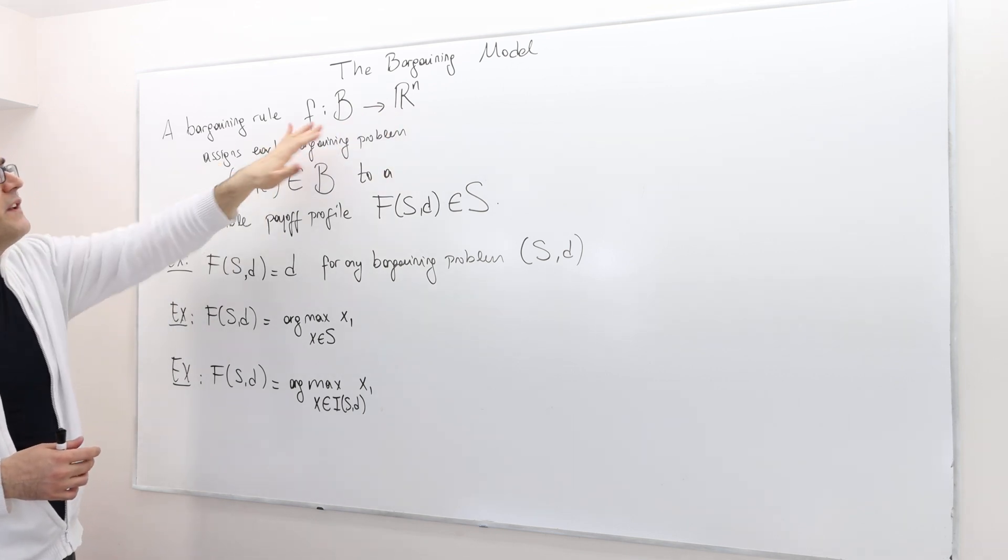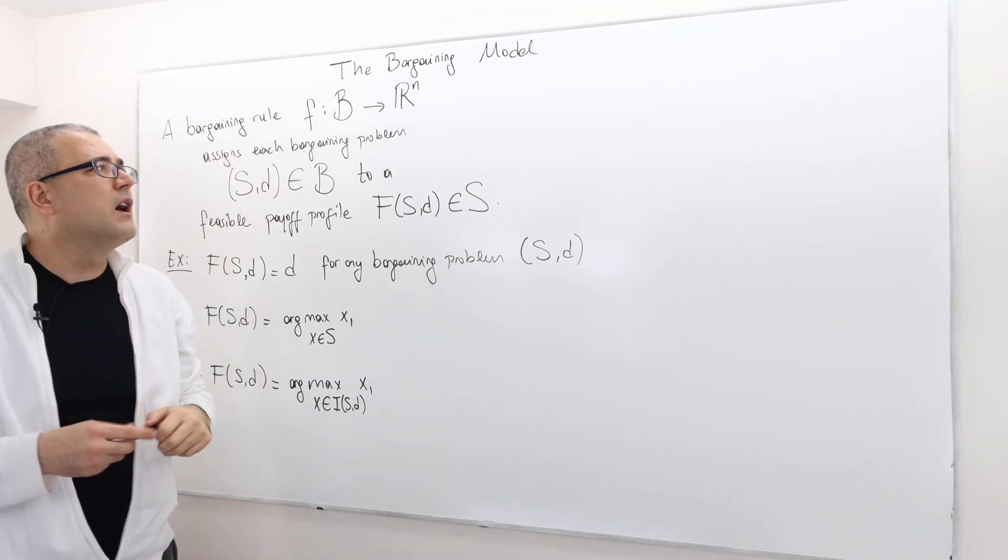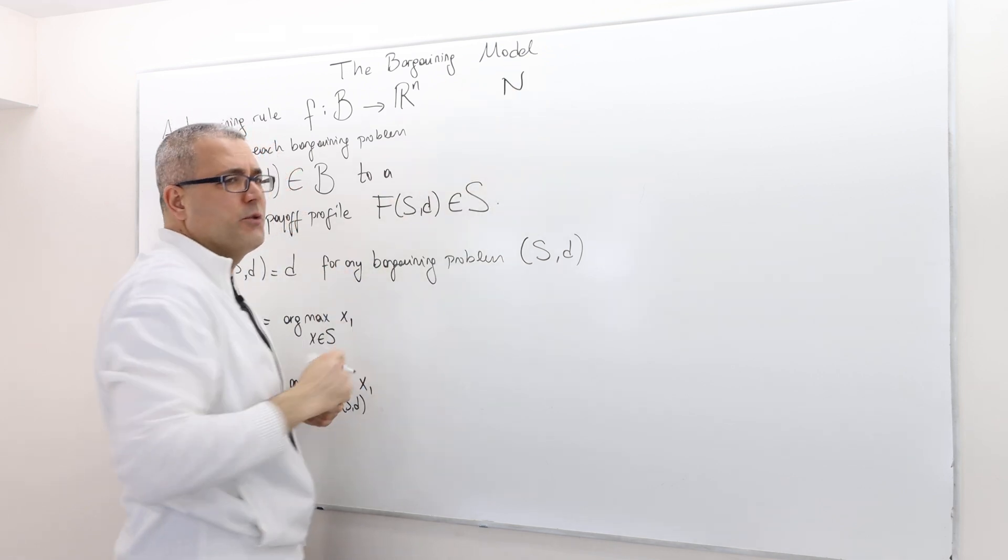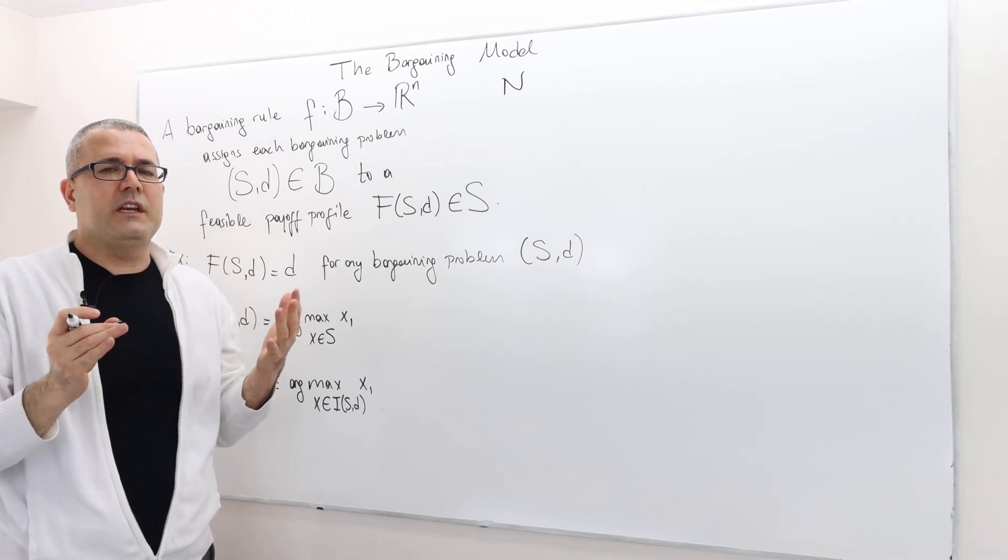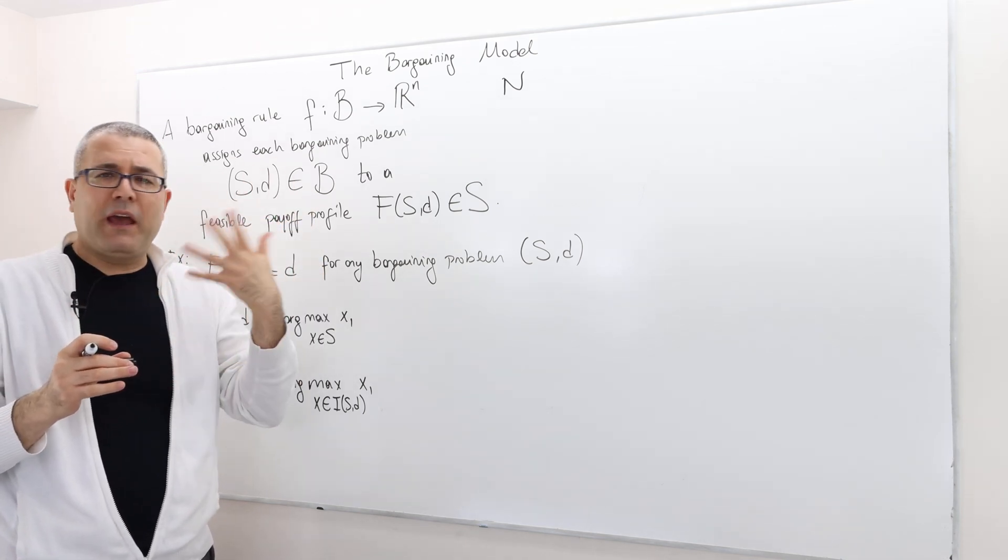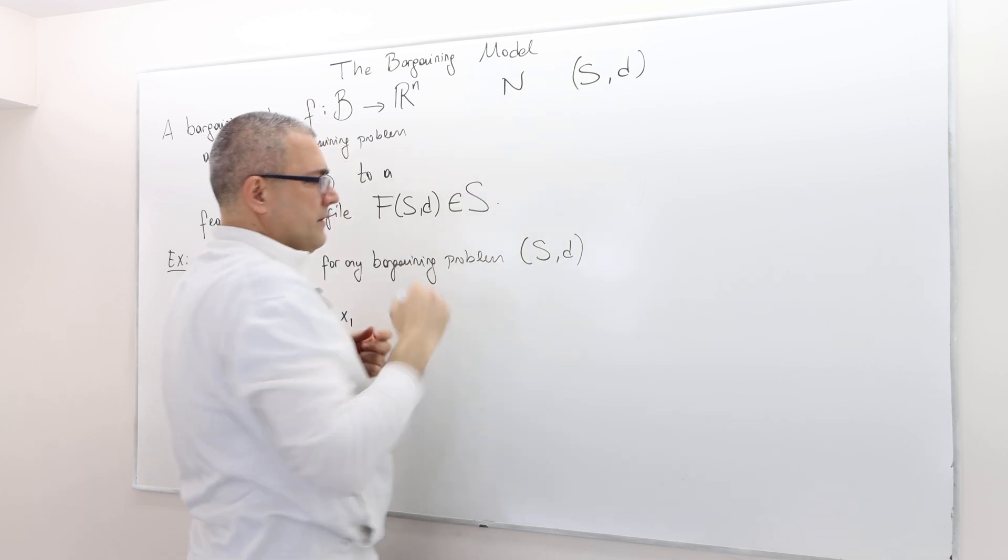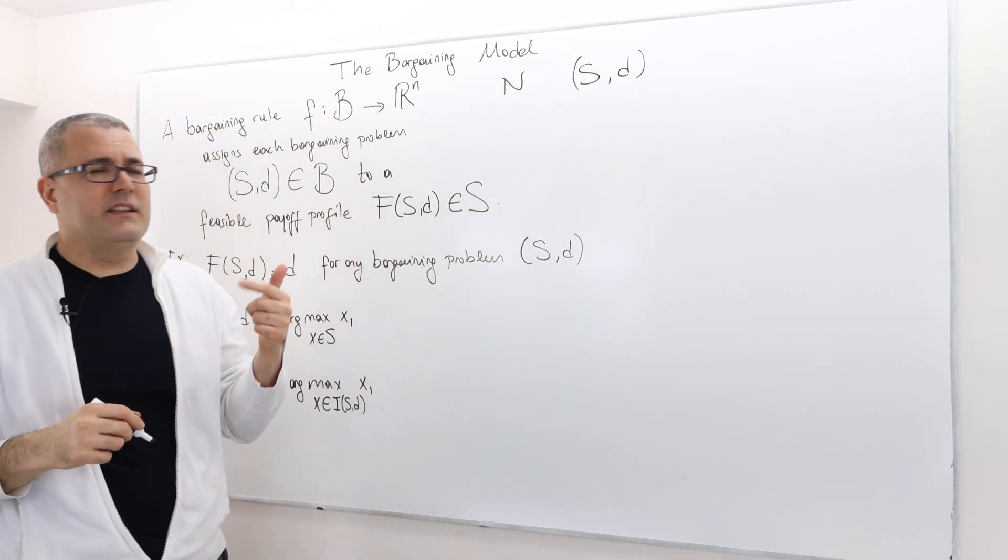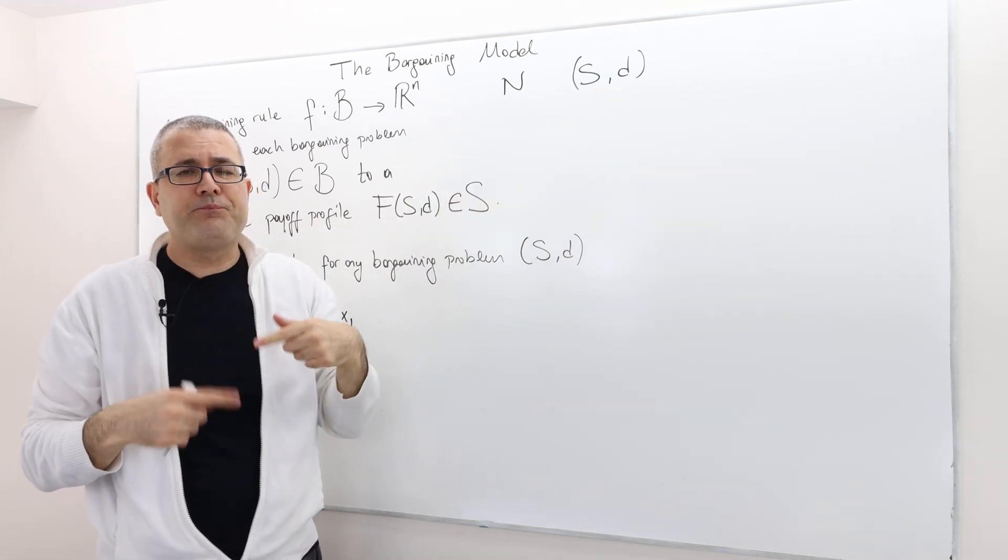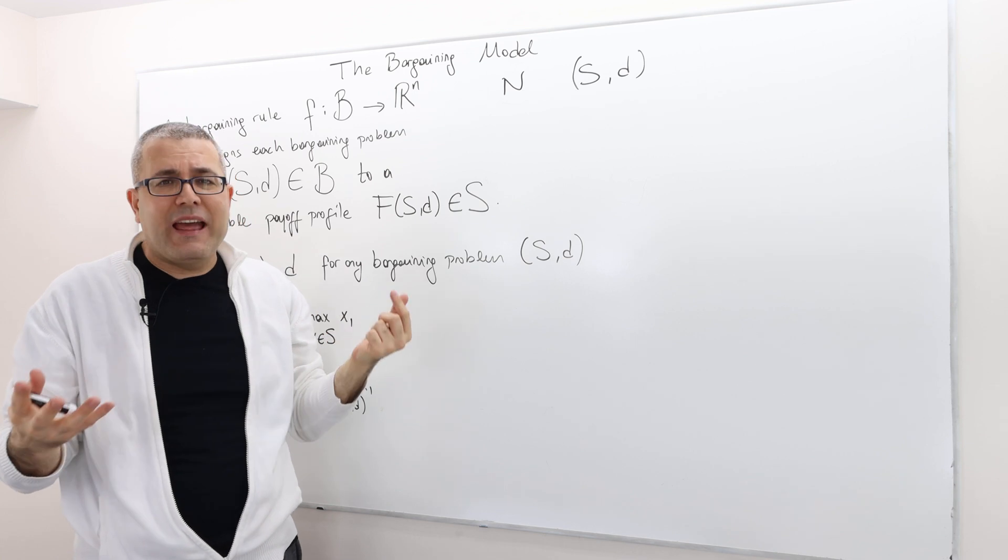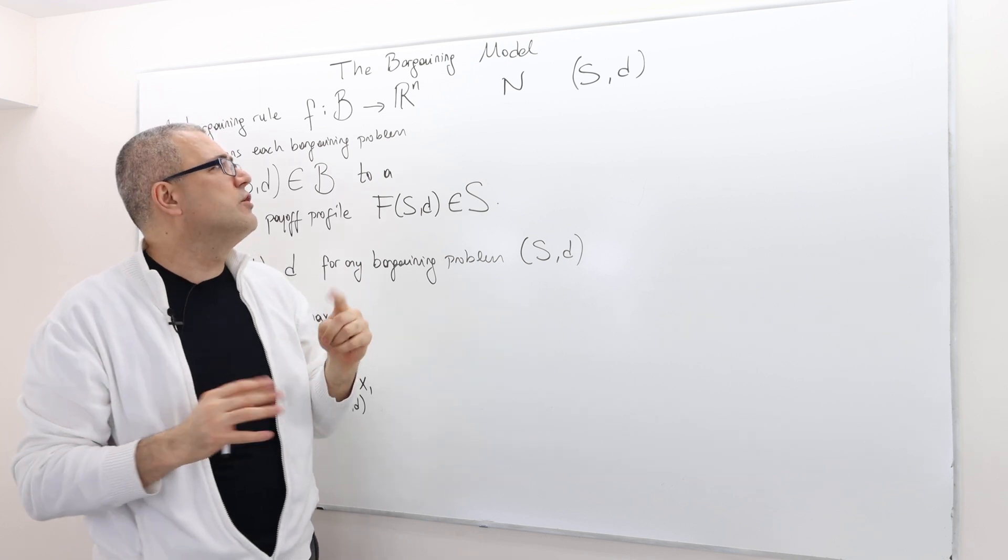What does that mean? Script B is the set of all bargaining problems between those N negotiators. That means you fix the set of players, set of negotiators, and then you change the payoffs.